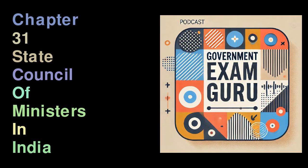Before a minister begins their work, they take two important oaths administered by the governor. The first is the Oath of Office, in which the minister promises to be loyal to the Constitution of India, to support the nation's sovereignty and integrity, to perform their duties honestly and sincerely, and to treat everyone fairly and uphold the Constitution and the law without favoritism or bias. Alongside the Oath of Office, ministers also take an Oath of Secrecy, in which they promise not to disclose any confidential information encountered while serving as a minister. This confidentiality is crucial for maintaining trust and integrity in public office.